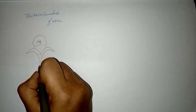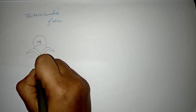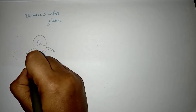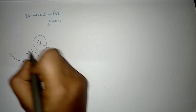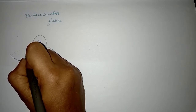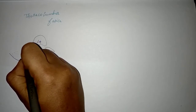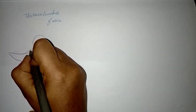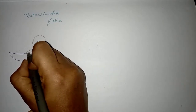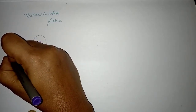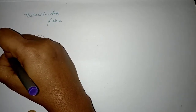The posterior layer extends from the spinous process and is the thickest layer. The middle layer extends from the tip of the transverse process. The anterior layer extends from the anterior surface of the transverse process. These three layers are fused and extend to form...